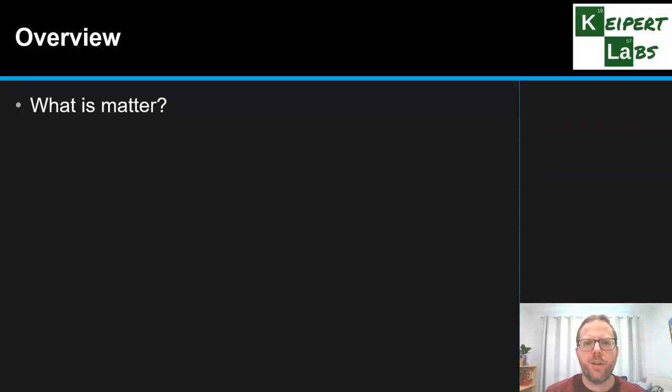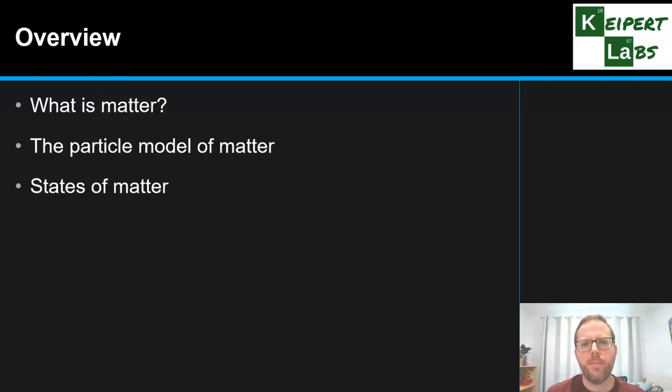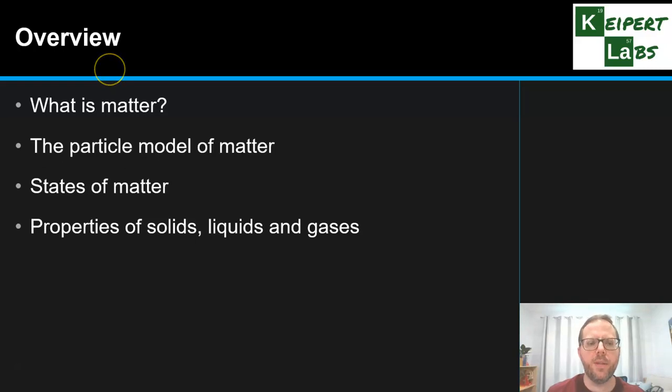So we're going to start by asking the question, what is matter? We're going to then look at the particle model of matter and some of the scientific principles around that. We're going to look at the three main states of matter, and then we're going to look at some of the properties of these three main states of matter: solids, liquids and gases. Alright, let's get started.